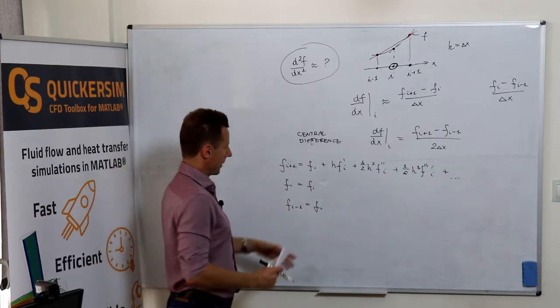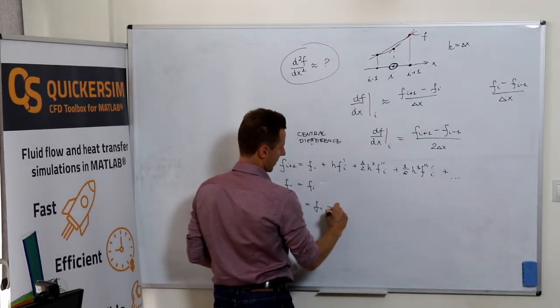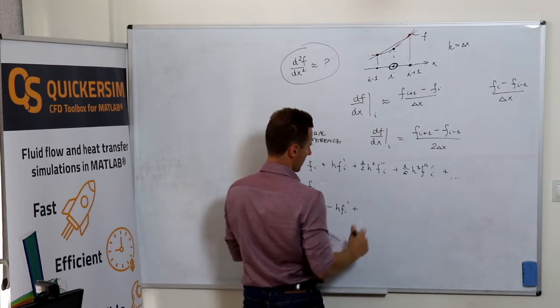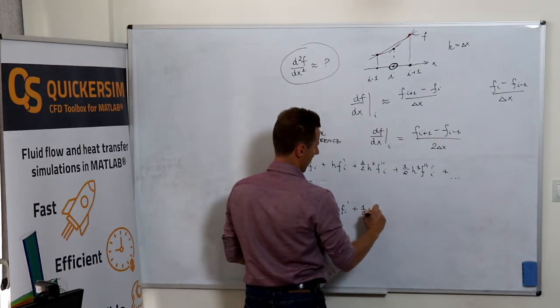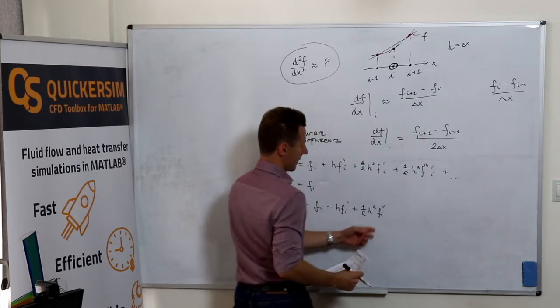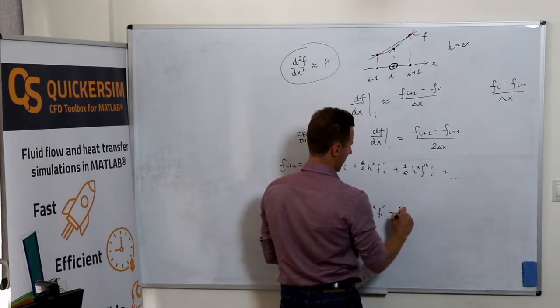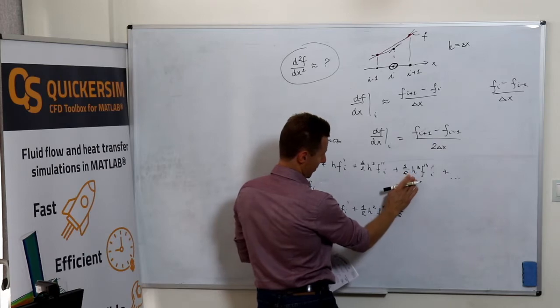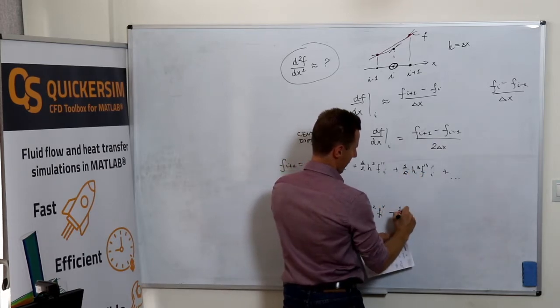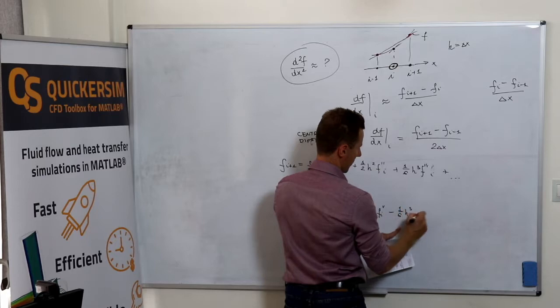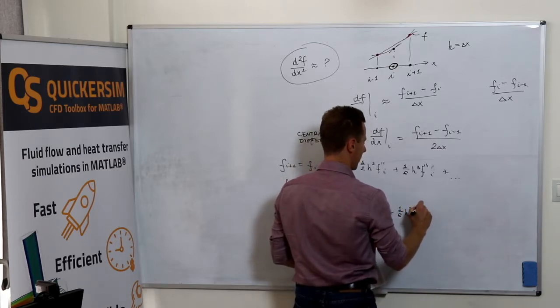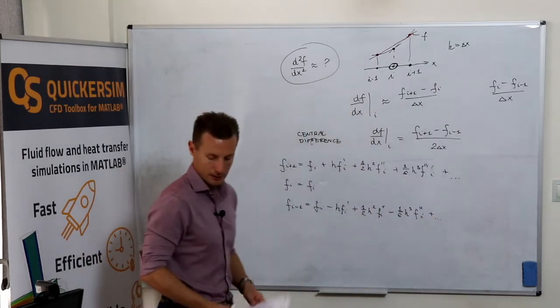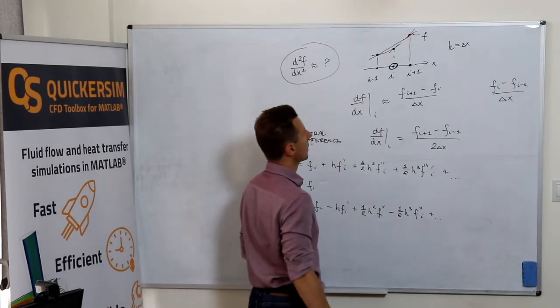Then f_{i-1} is f_i minus h times the first derivative at i, plus one half h squared times the second derivative at i. The odd terms always have—they do not have negative sign, but h is, so to say, negative—minus one sixth h cubed times the third derivative, et cetera.